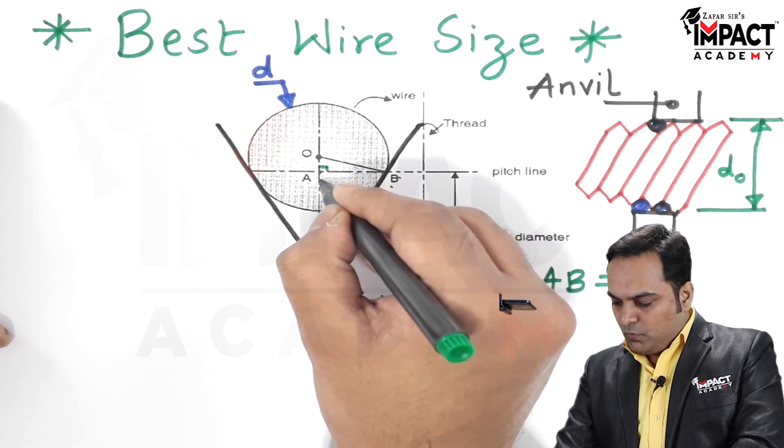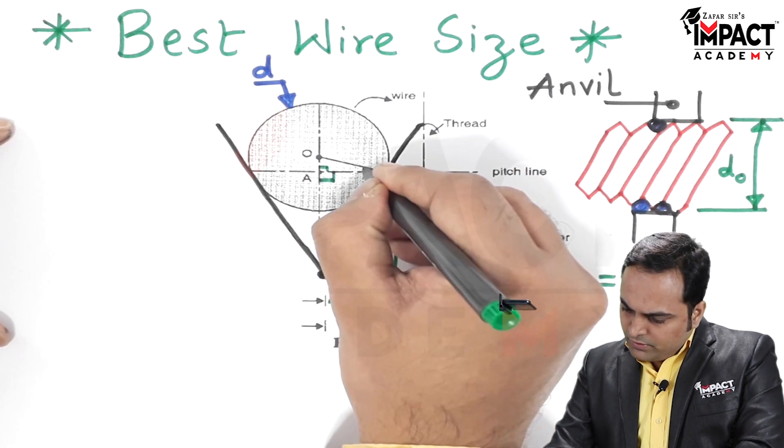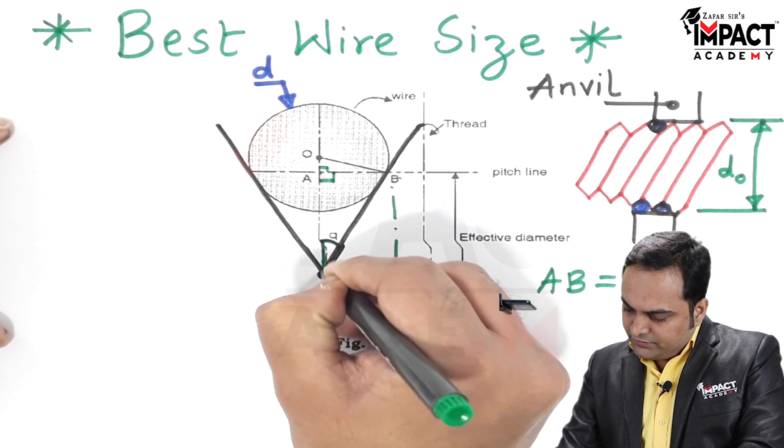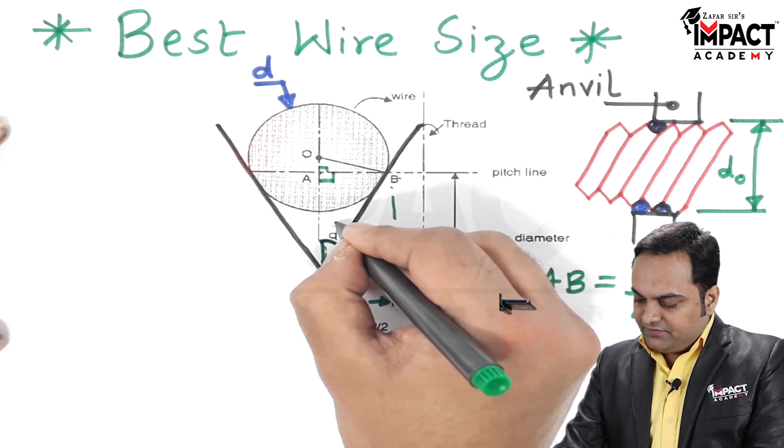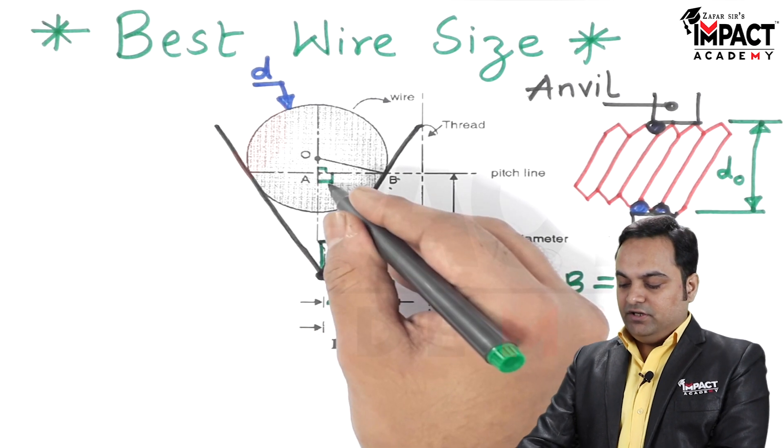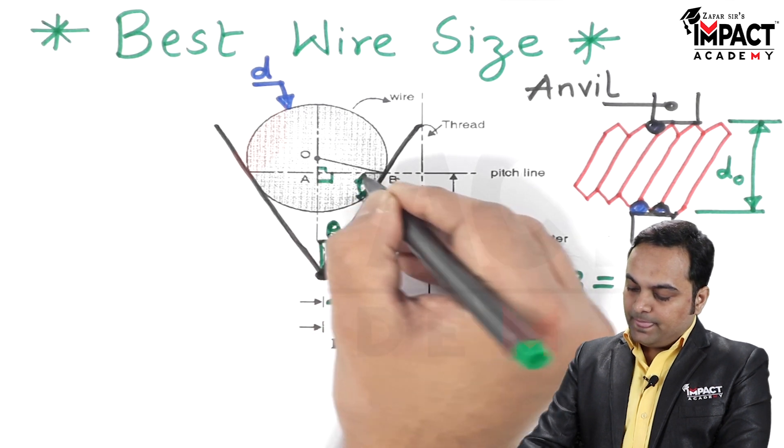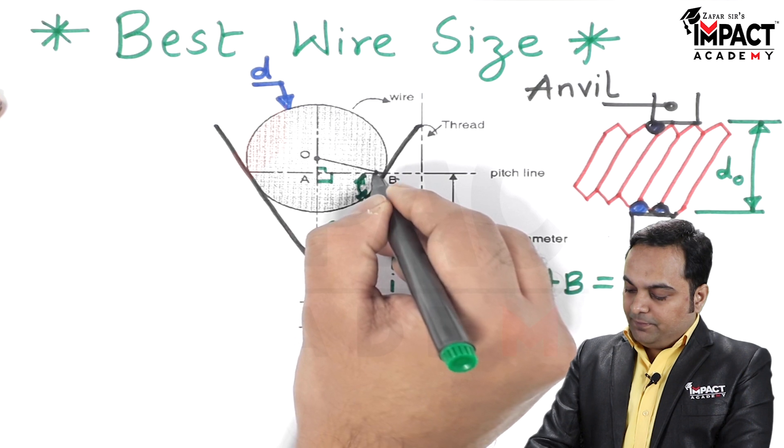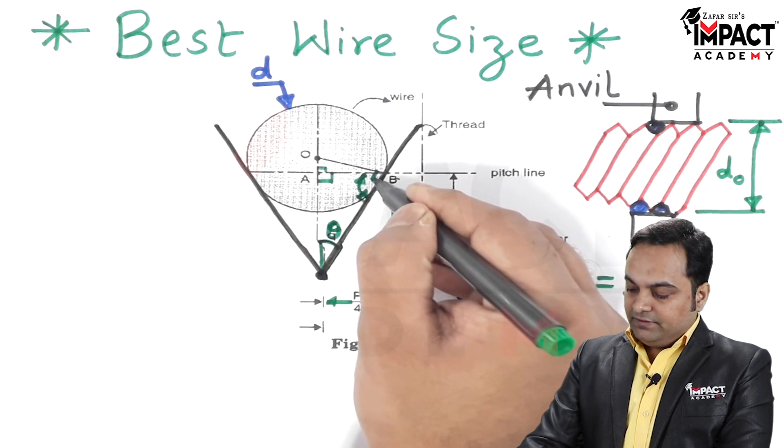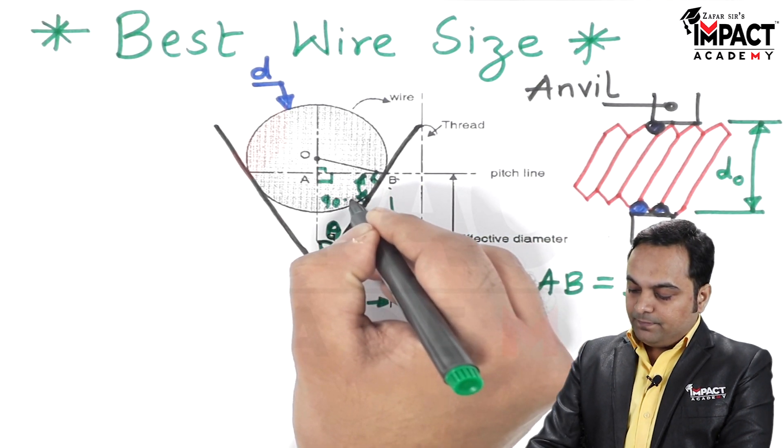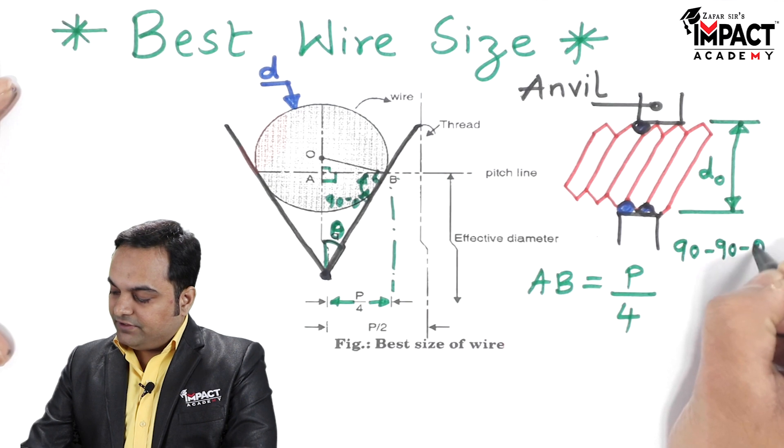Now what I'll do here is, since this angle is 90 degrees, we are having another angle which is 90 degrees over here. Then here this angle which is shown over here, that is half of the angle of the thread, we can say. This angle I am going to denote it as theta. So when this angle is theta, here we have 90, so this remaining angle is 90 minus theta.